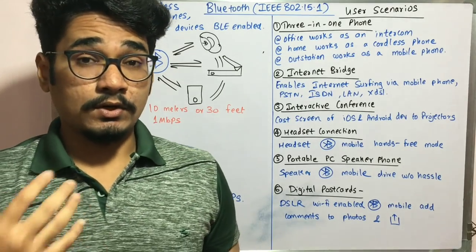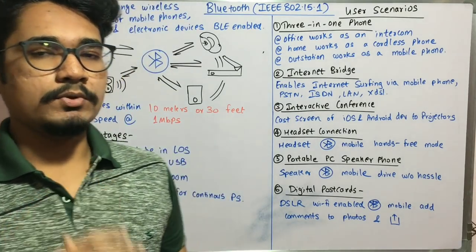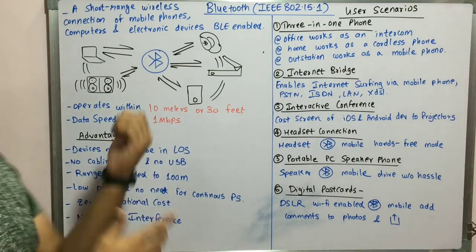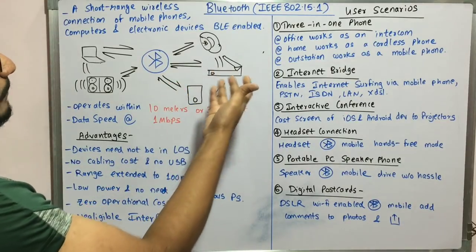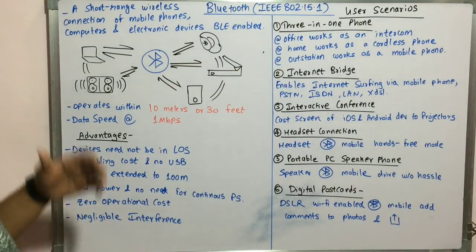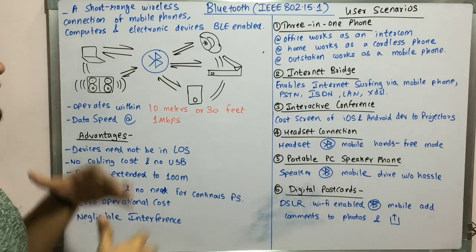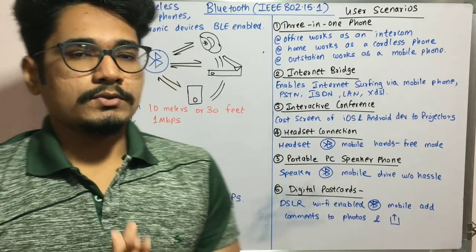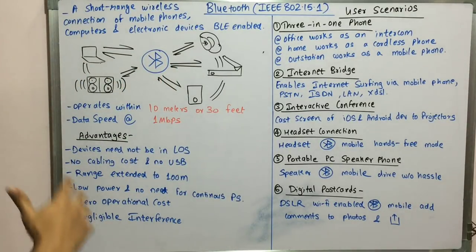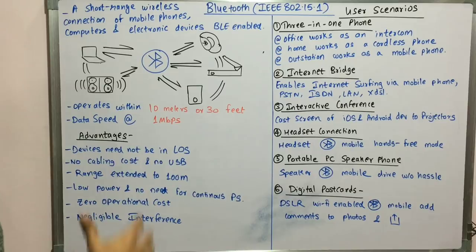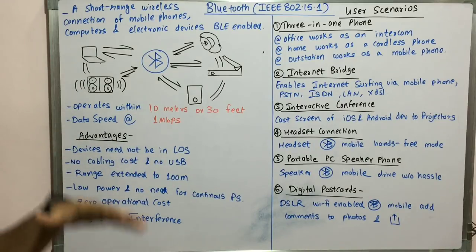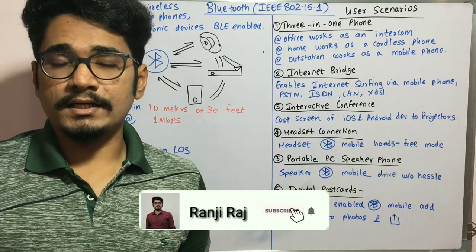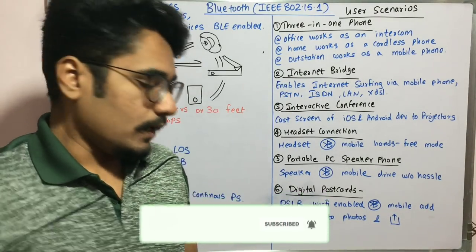Bluetooth demands that each device should be Bluetooth-enabled. This includes devices like a fitness tracker such as the Mi Band 3, a scanner, a smartphone, speakers, and a laptop — most of these devices have Bluetooth enabled. Bluetooth operates within a range of 10 meters or 30 feet and has a data transfer speed of about 1 Mbps.